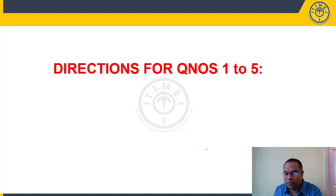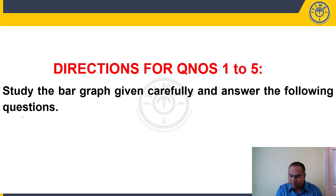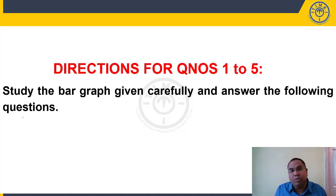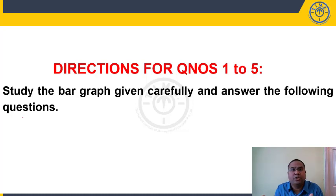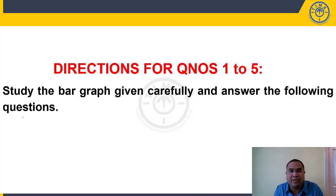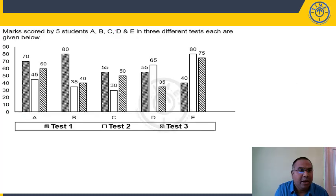Directions for questions 1 to 5: study the bar graph carefully and answer the following questions. The bar graph shows marks scored by five students A, B, C, D, E in three different tests. The hatched bar is test one, the plain bar is test two, and the third bar is test three. Note: in the examination, don't start with DI even if it appears first — follow the recommended order.